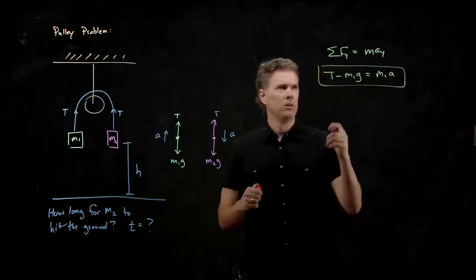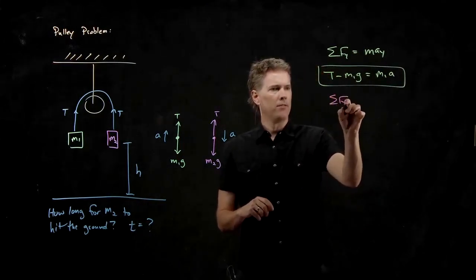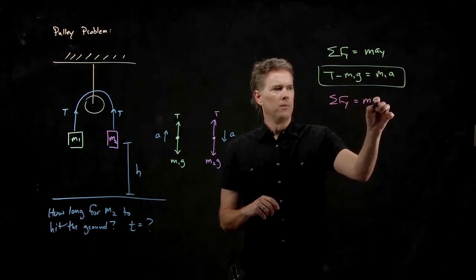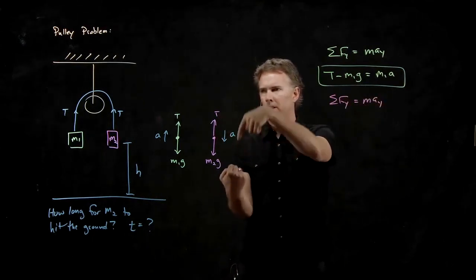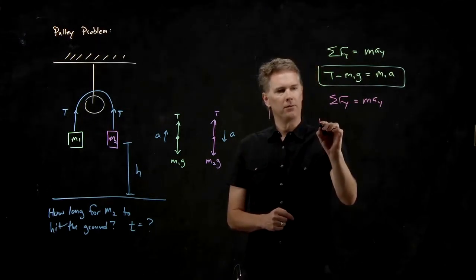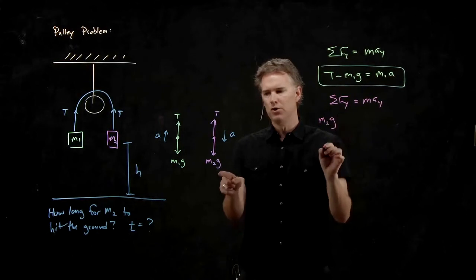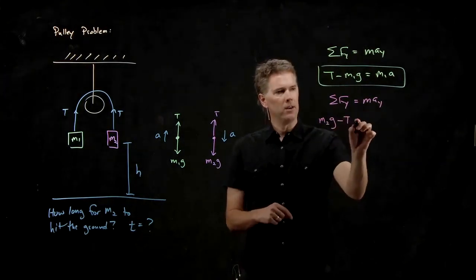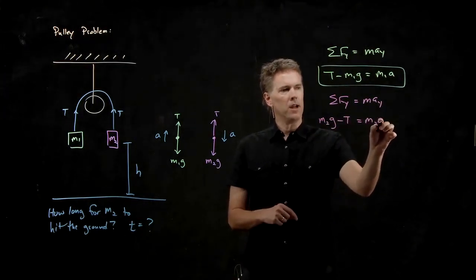For number two, we also have the vertical direction. But remember, we're going to flip it over and we're going to say positive is down for that one. And so the left side of this equation becomes M2g minus T equals M2a.